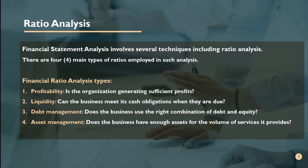Financial statement analysis involves several techniques including ratio analysis. There are four main types of ratios: first, profitability — is the organization generating sufficient profits? Second, liquidity — can the business meet its cash obligations when they are due? Third, debt management — does the business use the right combination of debt and equity? Fourth, asset management — does the business have enough assets for the volume of services it provides?